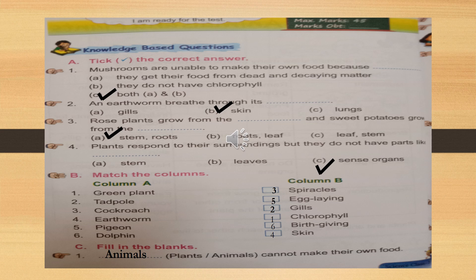Second one: the earthworm breathes through its dash. Gills is used for fish. The correct answer is B — skin. The earthworm breathes through its skin. Understand children? The correct answer is B: skin.